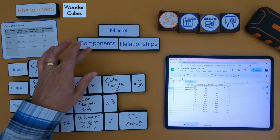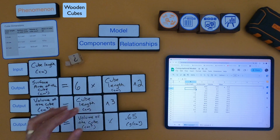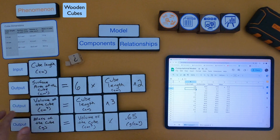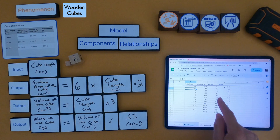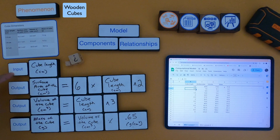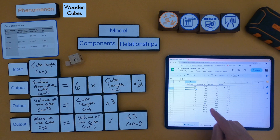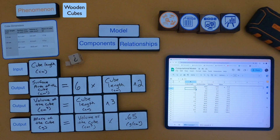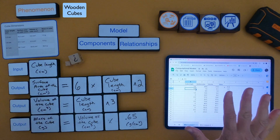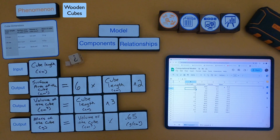Remember, the first thing you do is identify all the components, find how they're related, and write equations for each of those relationships. Then you have the computational power kick out the output. Input is what you put into the spreadsheet, and the output is what the spreadsheet calculates for you. Just think how long it would take to do all those calculations by hand — that's the power of a computational model.